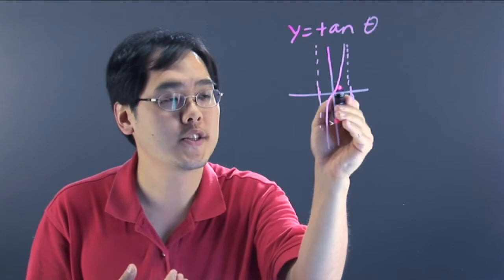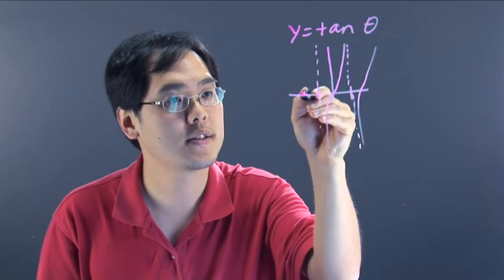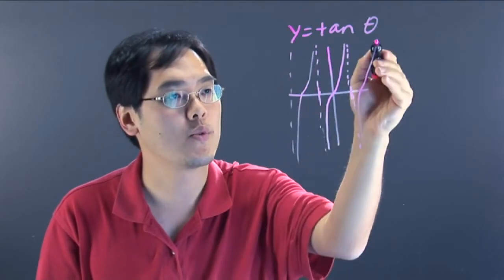Now imagine this same graph repeated many times over. So like this, like this, and just imagine asymptotes surrounding all of these.